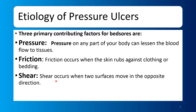The third cause is shearing forces. Two surfaces move in opposite directions. When the body's two surfaces move in opposite directions and rub together, the temperature increases, oxygen demand increases, and the tissues are deprived of oxygen. If tissues don't get oxygen, then tissue death occurs.